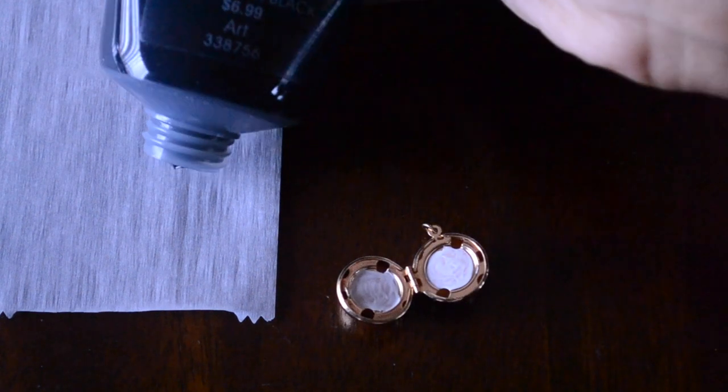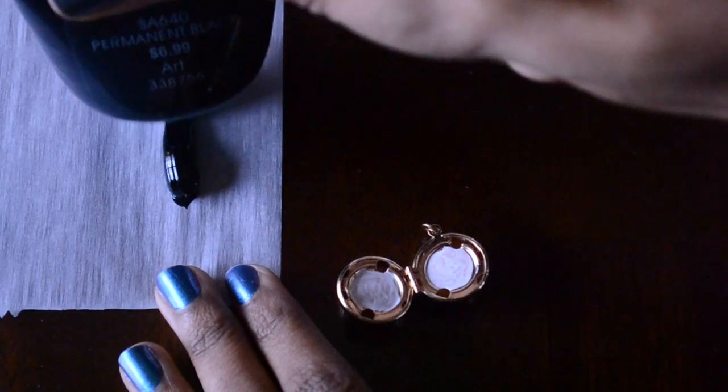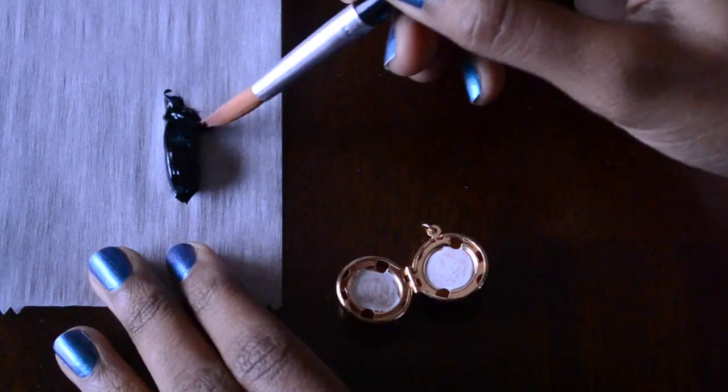Once the gesso is dried, which usually doesn't take that long, take the black paint and paint over it, completely covering the white.